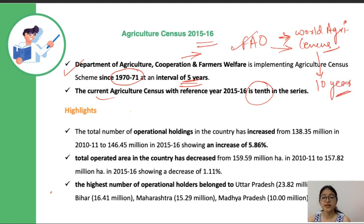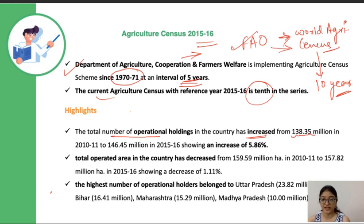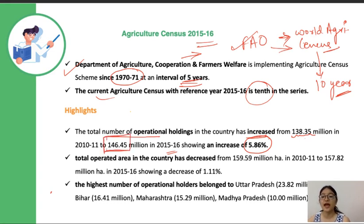The first highlight is that the total number of Operational Holdings in the country has increased. In 2010-11 there were 138.35 million holdings, and this has increased to 146.45 million in 2015-16, showing an increase of 5.86%. Remember these two figures: total holdings of 146.45 million, and the percentage increase of 5.86%.